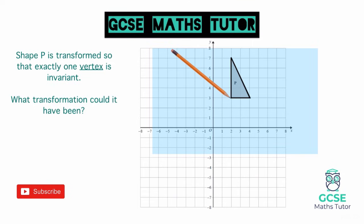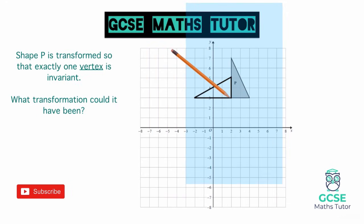If we do a 90 degree anti-clockwise rotation, the triangle ends up in a new position, but that one particular vertex hasn't moved at all. All the other points on the triangle have moved, but that one vertex has stayed in exactly the same place — and that is what invariant means. That's what we're going to be looking at throughout the video.